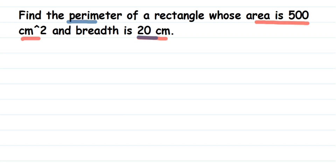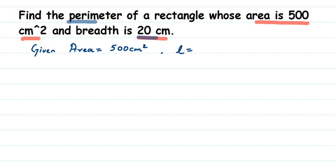So how do we find the length? They have also given us the area. Using the area and the breadth, we can first find the length value and then find the perimeter. So, given: area of rectangle is 500 centimeter square, and breadth is 20 centimeter. We have to first find out the length.